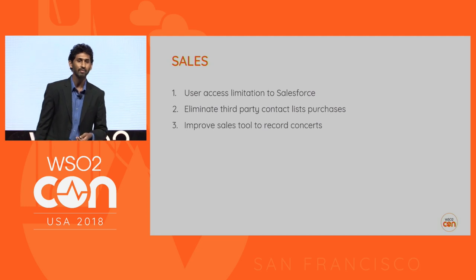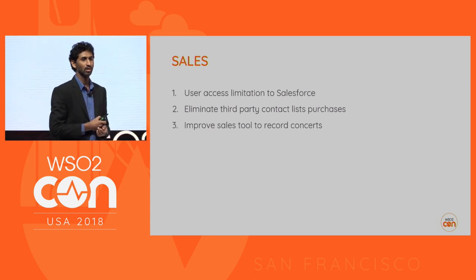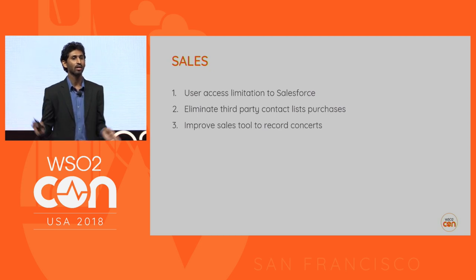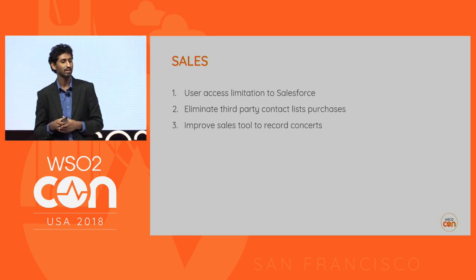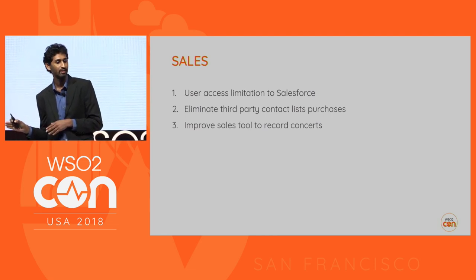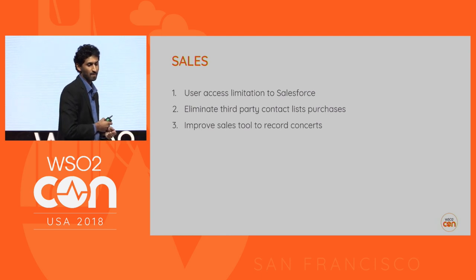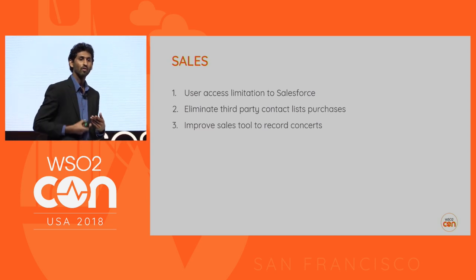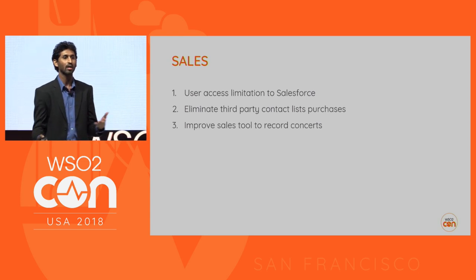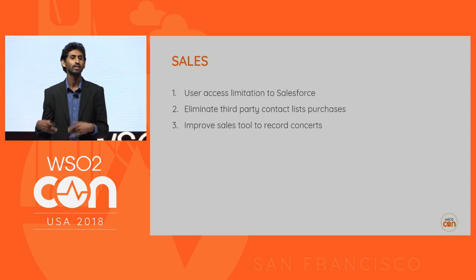In the sales team: previously there was no role-based access concept, so all sales team members could access all sales information. Now access is restricted — only relevant sales people can access relevant sales details — limiting the risk of information reaching unwanted people. WSO2 also eliminated third-party contact lists they had purchased and now rely only on information from reliable sources. Sales tools were improved to match consents received from users — before sending a marketing email, sales people can now check whether active consent exists for that communication.